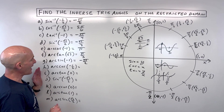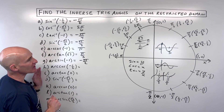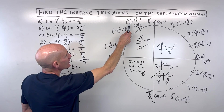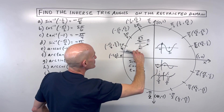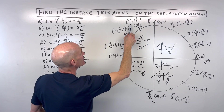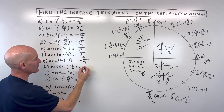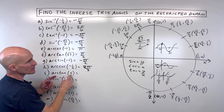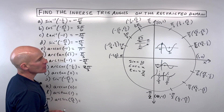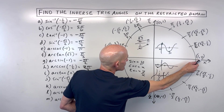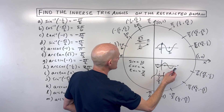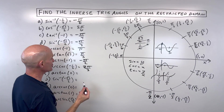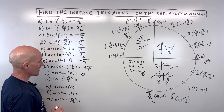For letter H: arc cosine of negative one-half is asking cosine of what angle equals negative one-half. Cosine is the x-coordinate — where is x equal to negative one-half? Remember cosine is restricted from zero to pi in the first and second quadrants. That's going to be at two pi over three. For letter I: arc tangent of zero means tangent of what angle equals zero. Tangent is y over x. Zero over one is zero. It's also true at another point, but tangent is restricted from negative pi over two to positive pi over two, so the answer is zero radians.